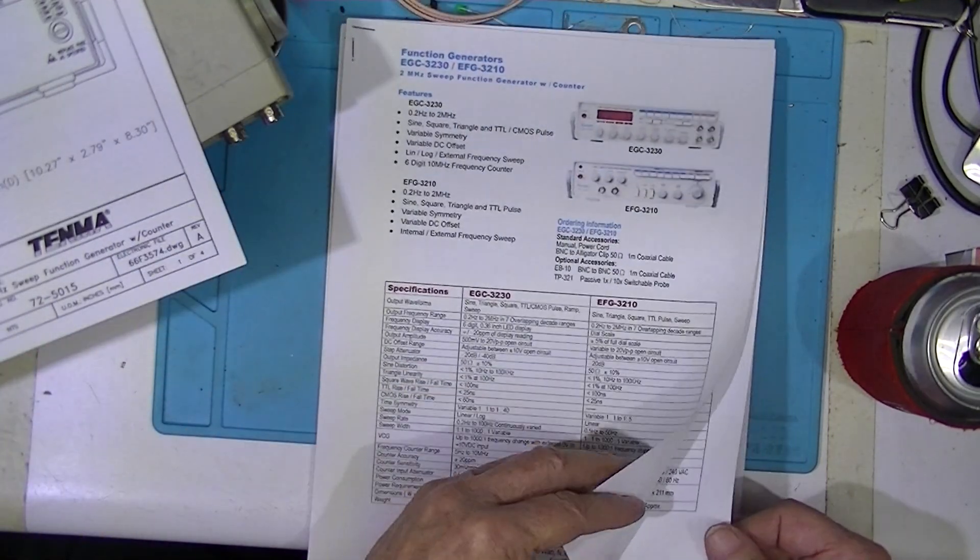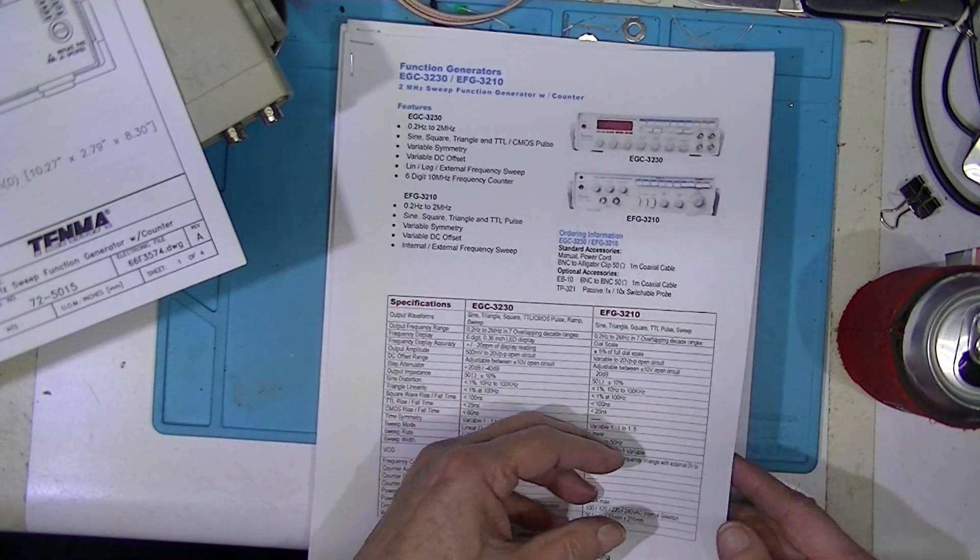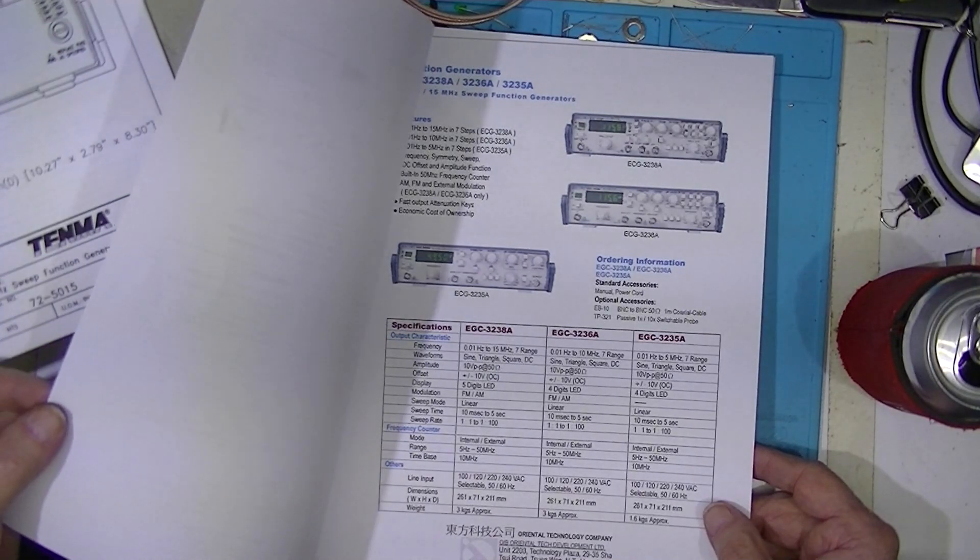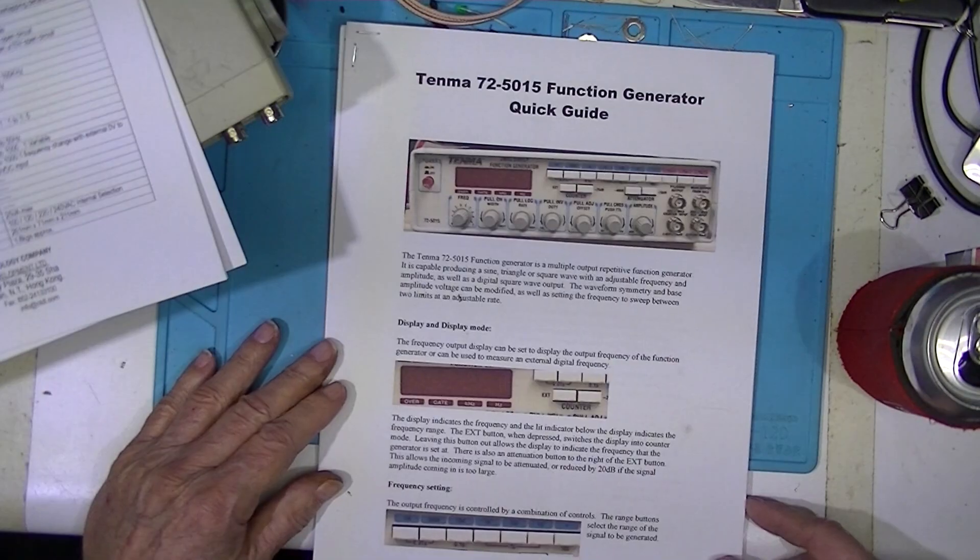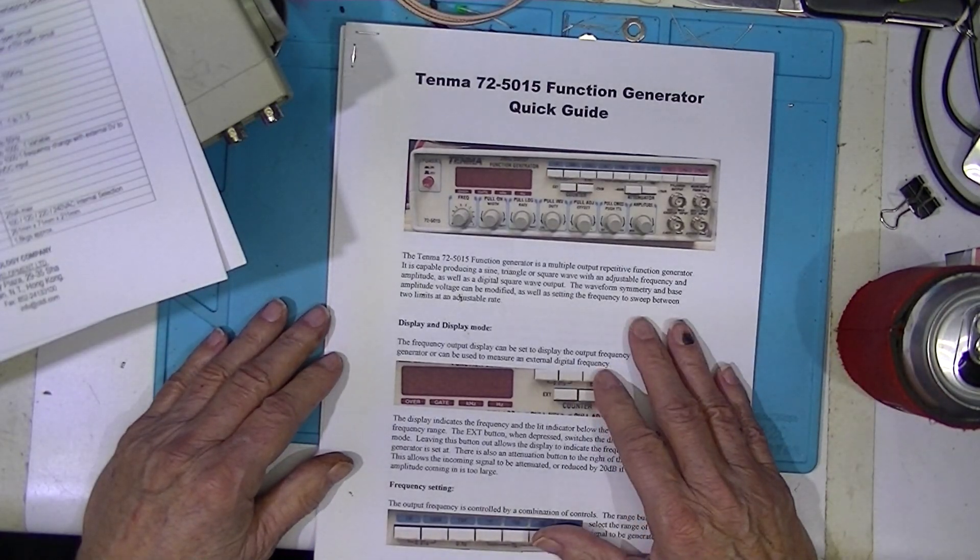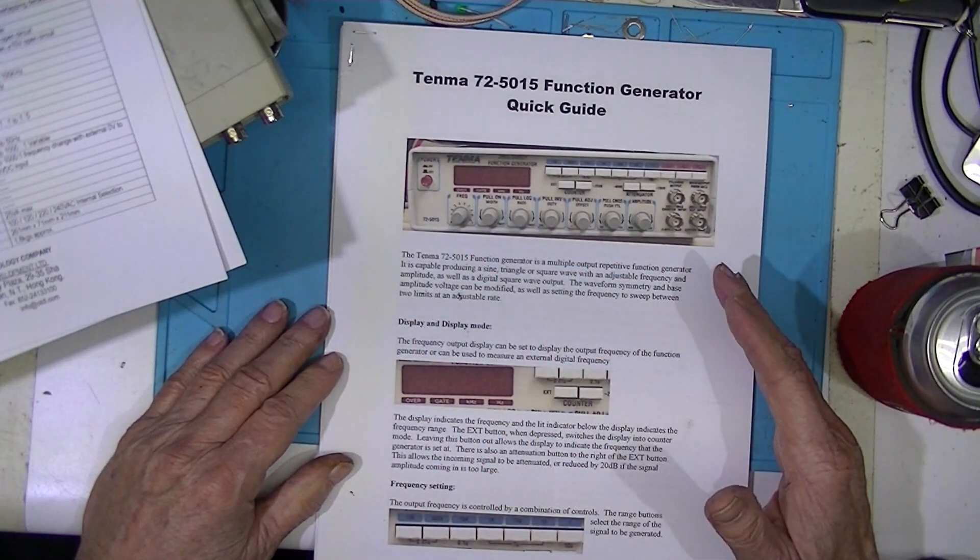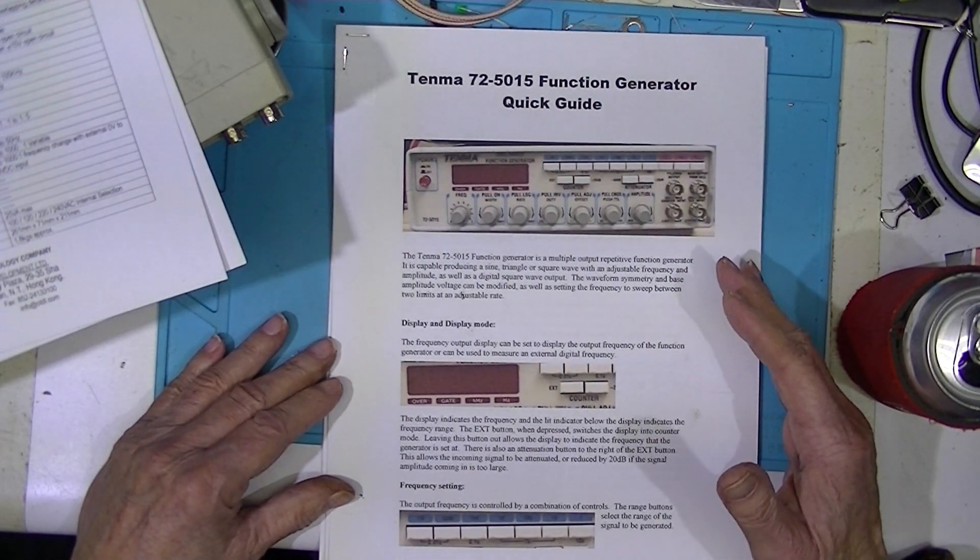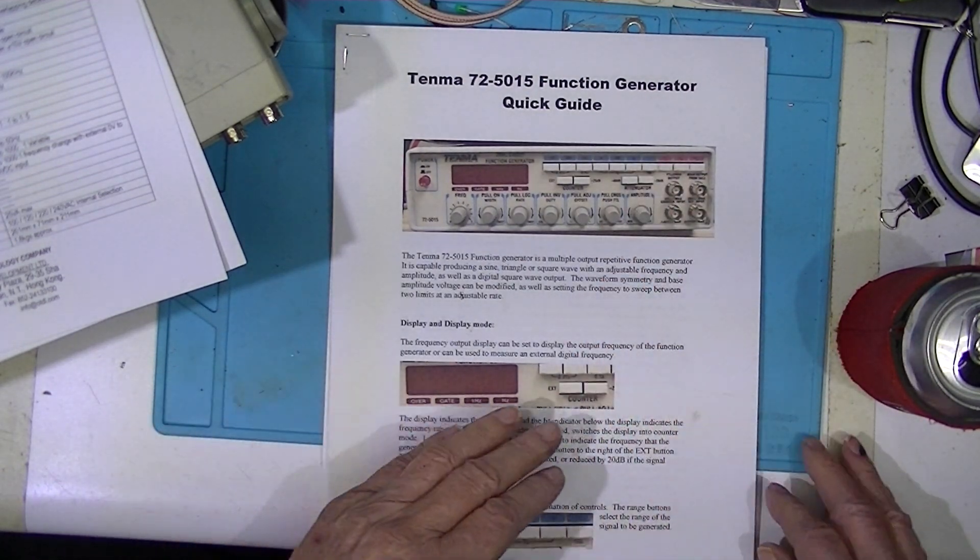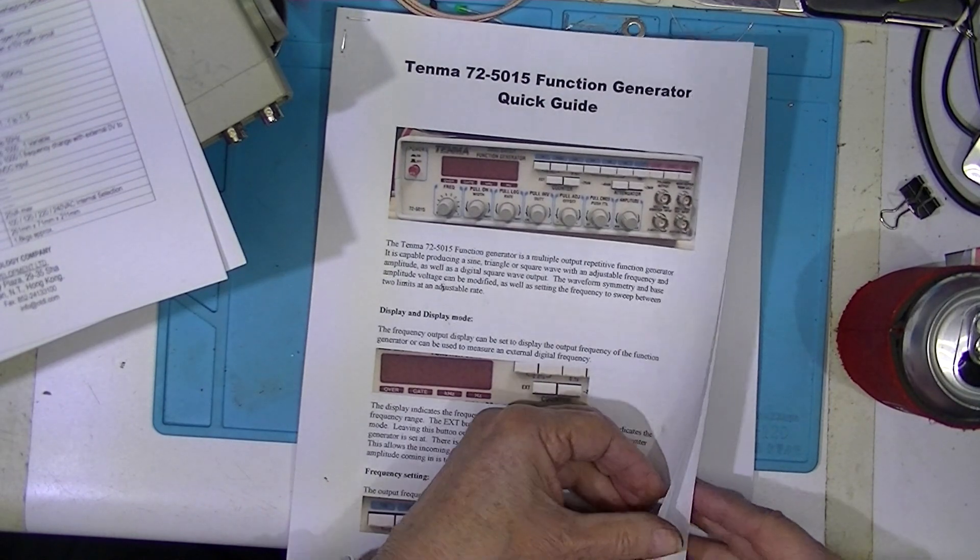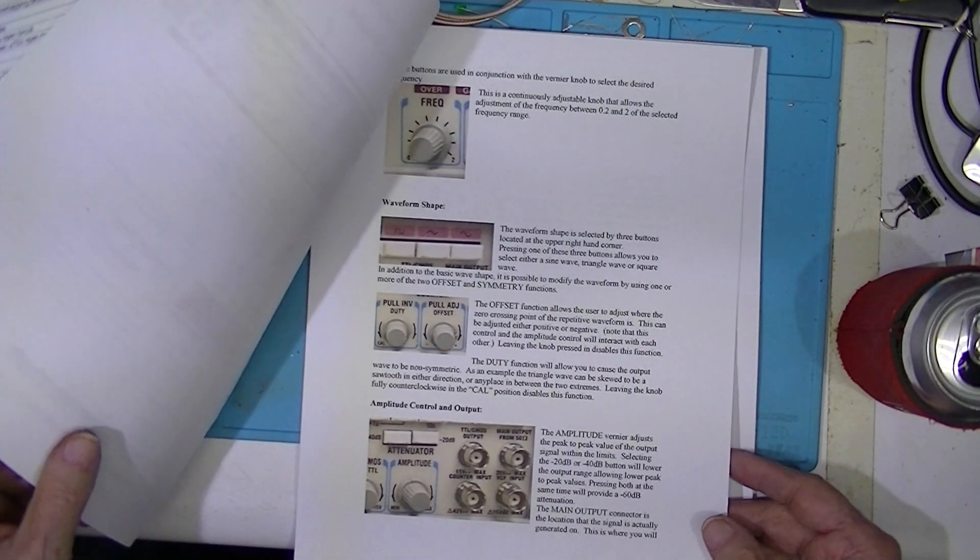They actually only offer this. The other two pages are on two or three different function generators. I did find this document for the Tenma, and it's published by probably a professor in a laboratory environment, an educational institution. He's taken color pictures and gave the students three pages of instructions for operation.